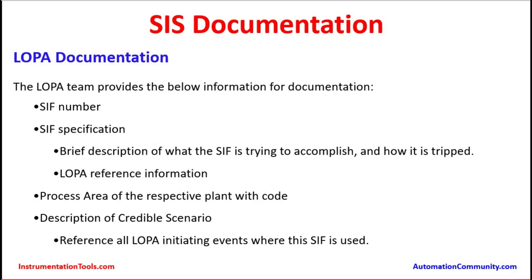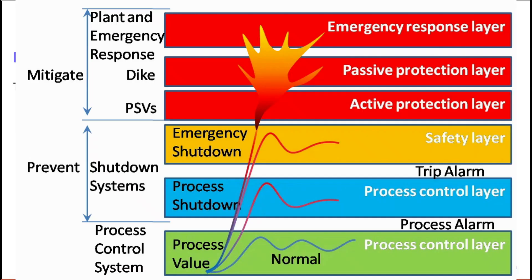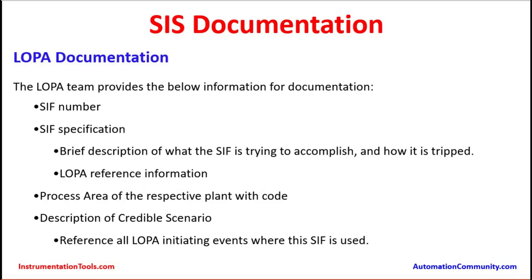SIS documentation involves different types of documentation. The first one is LOPA documentation. LOPA stands for Layer of Protection Analysis. The LOPA team provides the following information for documentation: the SIF number (Safety Instrumented Function number), SIF specification, a brief description of what the SIF is trying to accomplish, how it is tripped, what the intent is, and how the trip action is carried out.